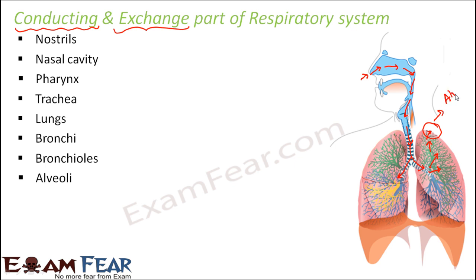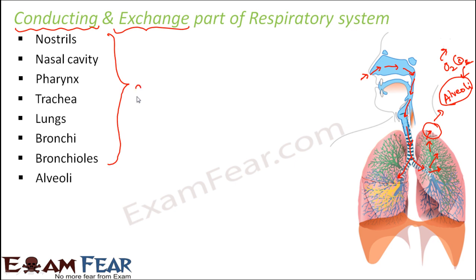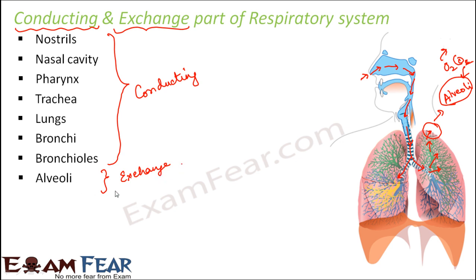Once the air reaches the alveoli, it is no more conducted. This is the place where actual exchange of oxygen and carbon dioxide takes place. Oxygen is given to the blood vessels and carbon dioxide is given by the blood vessels to the alveoli. So the real exchange happens at the alveoli. From nostrils to bronchioles, all of these together form the conducting part of the respiratory system, and alveoli form the exchange part — the site of actual exchange of oxygen and carbon dioxide between blood and the atmosphere.